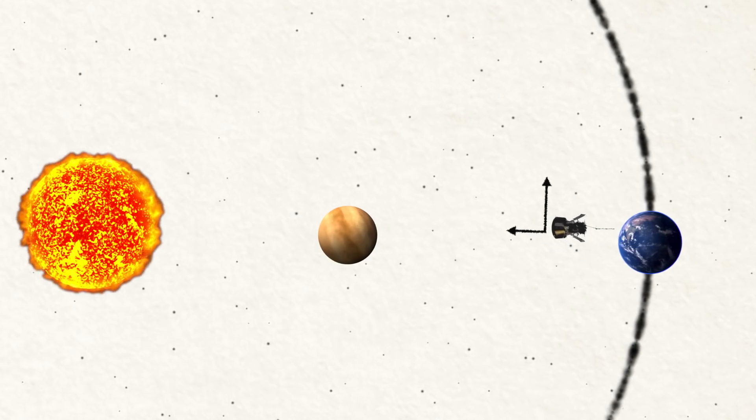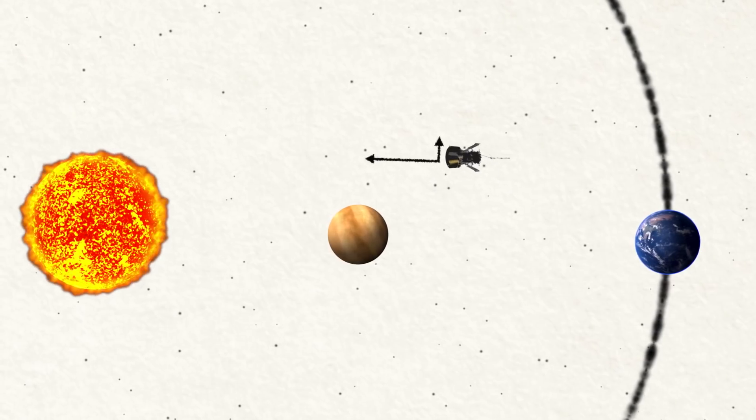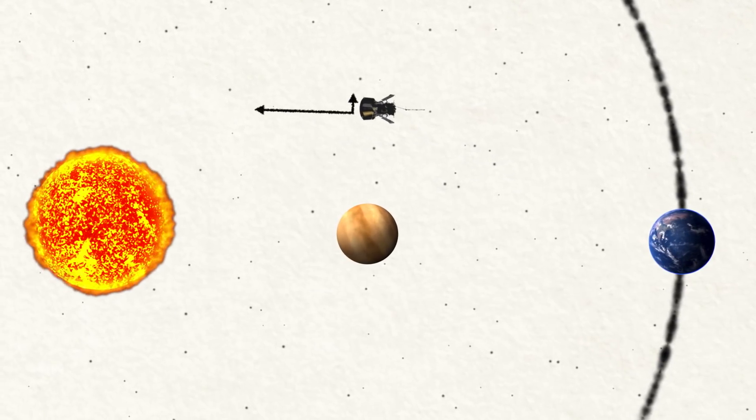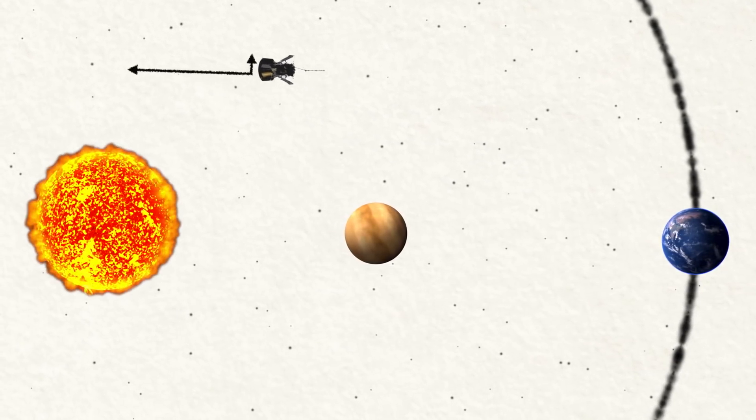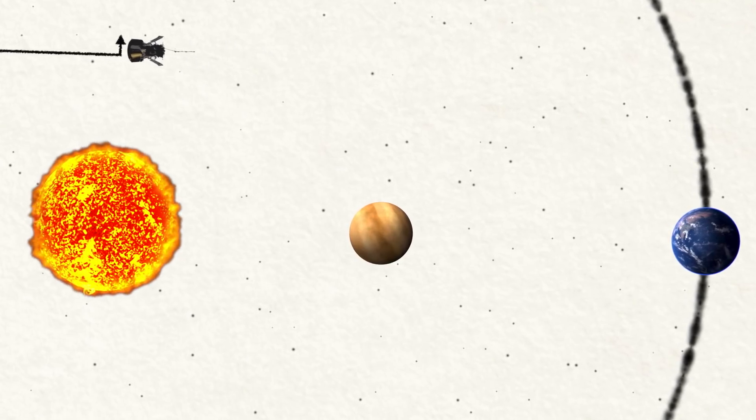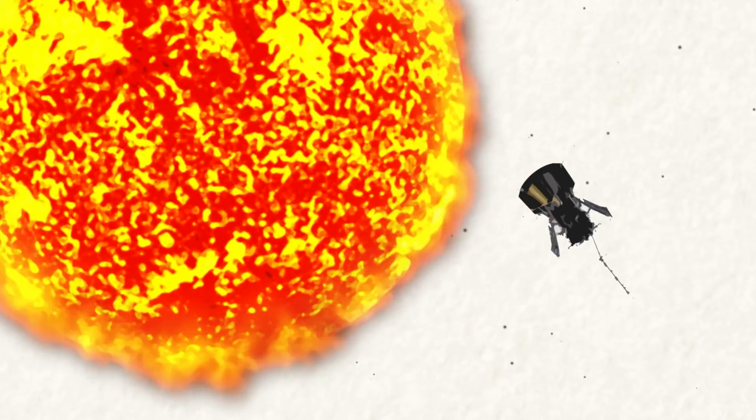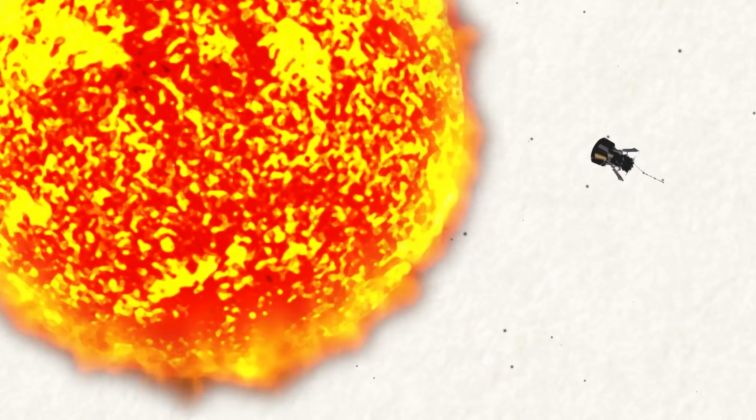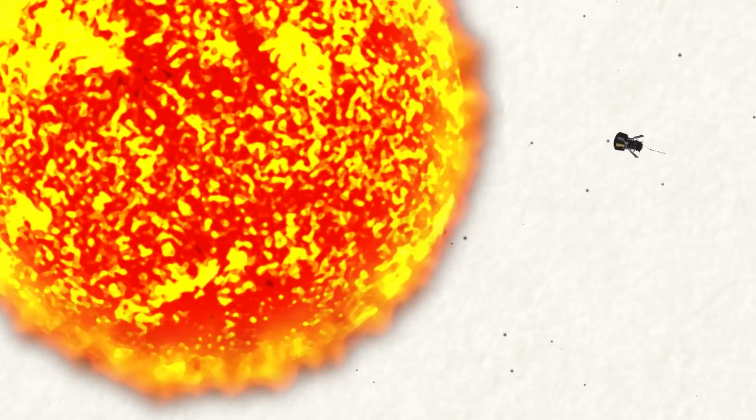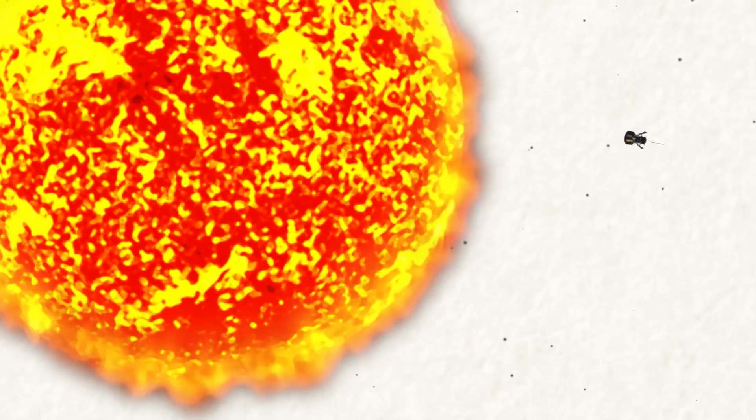When it finally does make its closest approach to the Sun, Parker Solar Probe will have lost much of its sideways speed, but gained a great deal of overall speed thanks to the Sun's gravity. Parker Solar Probe will hurtle past the Sun at 430,000 miles an hour, the very first human-made object to get that close.